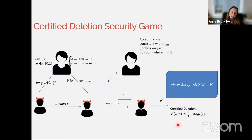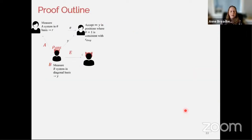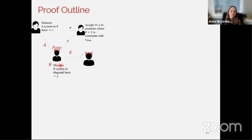The adversary is trying to simultaneously convince the originator of deletion while being able to distinguish whether the actual message or the dummy zero was encrypted. We say we have the certified deletion property if the probability of winning is bounded by one-half plus a negligible function in lambda, the security parameter. The outline of the proof uses a very common technique from QKD: look at the entanglement-based game, where the adversary creates an entangled system rho_ABE.